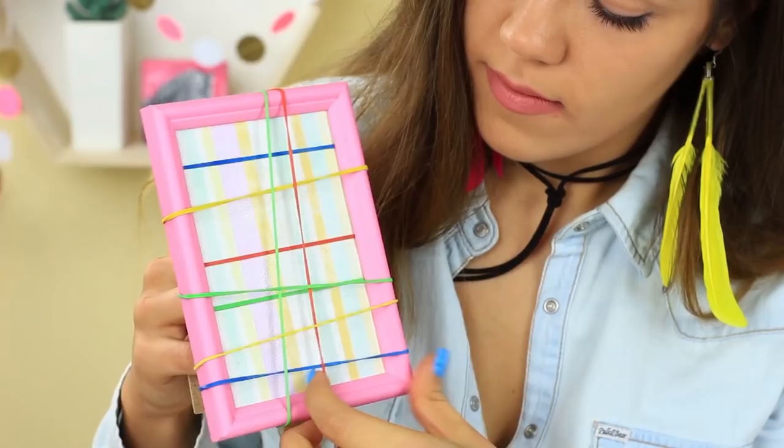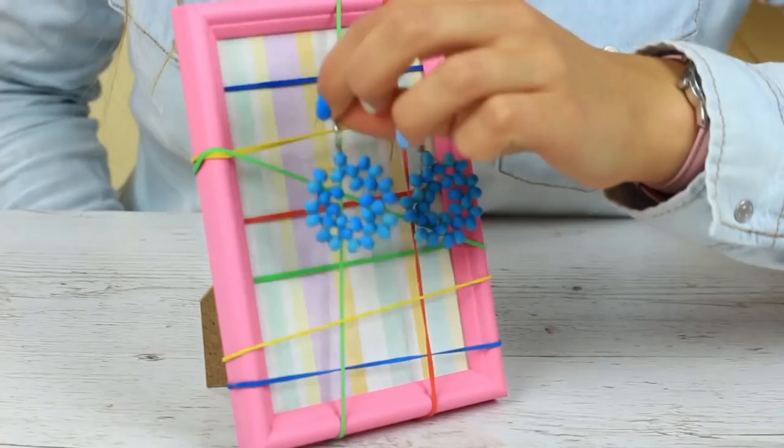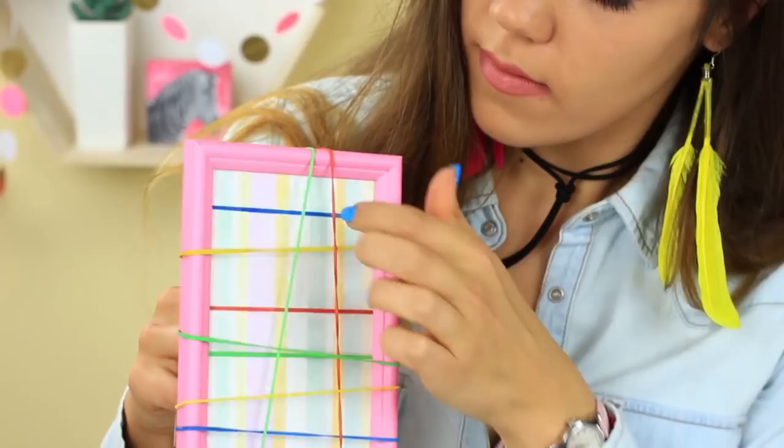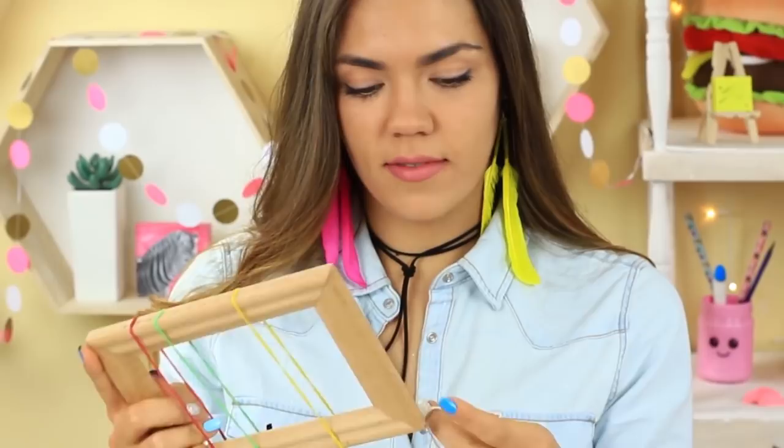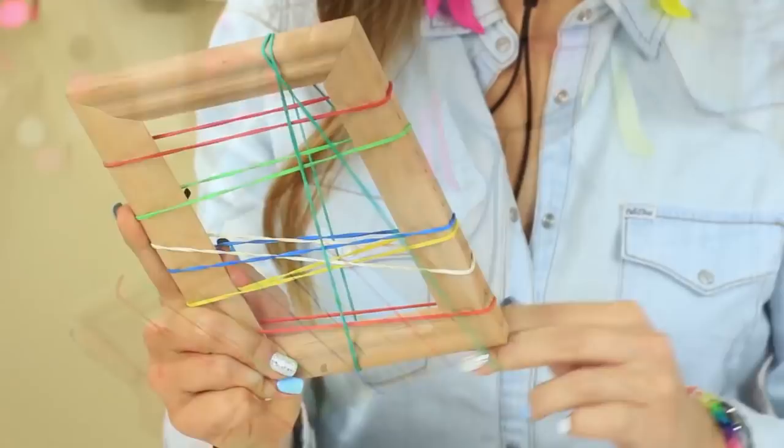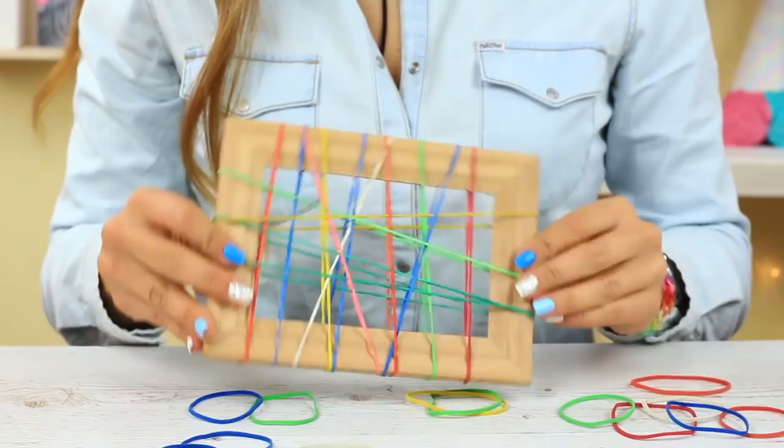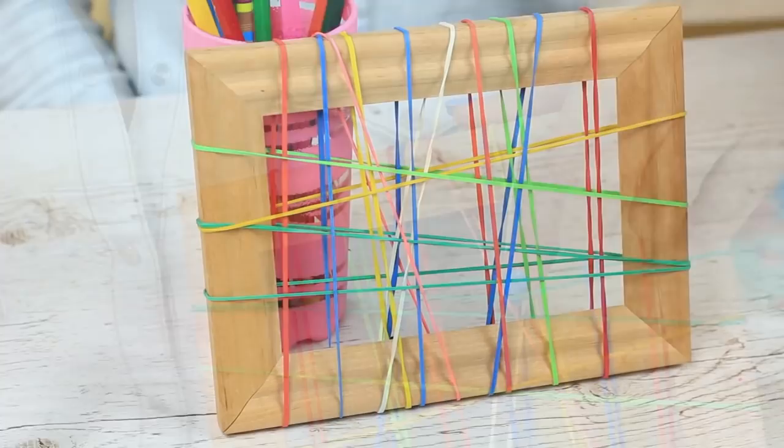If you need more space to place your jewelry, you can make the frame holder in another way. Take a frame without the back. Put on lots of multicolored elastics. Cross them changing directions. Tangle them at a slant. There will be enough space to hang all your earrings. Let's test the new holder. Perfect!